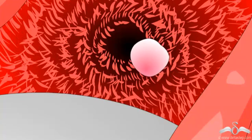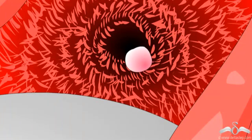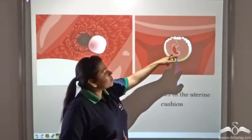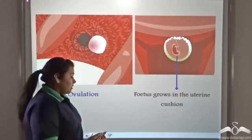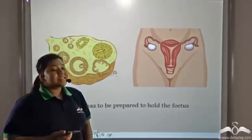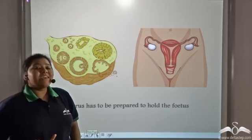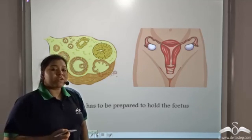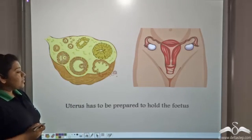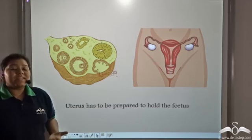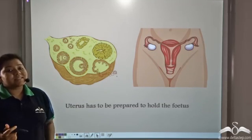The fimbriae collect the ovum, and then the ovum passes through the oviduct. If fertilization takes place in the oviduct, then the fertilized ovum comes and gets embedded into the uterine cushion. The uterus is the place which holds the growing fetus if fertilization takes place.